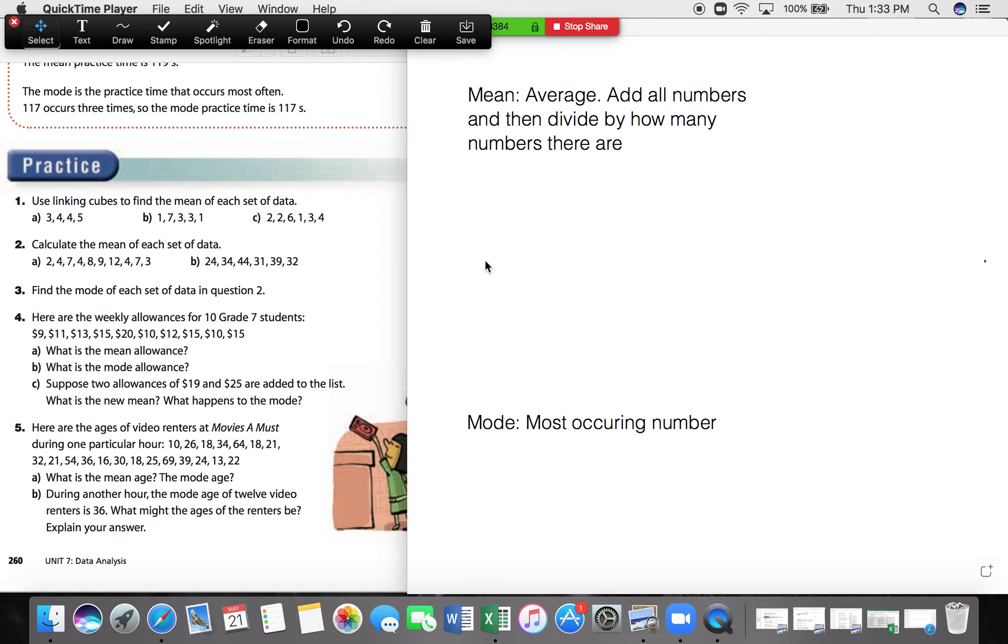So the first question, part A, what is the mean allowance? And we'll look at that up top here. So remember from yesterday, your mean is the average. And to find that average, to find the mean, you need to add all the numbers and then divide by how many numbers there are.